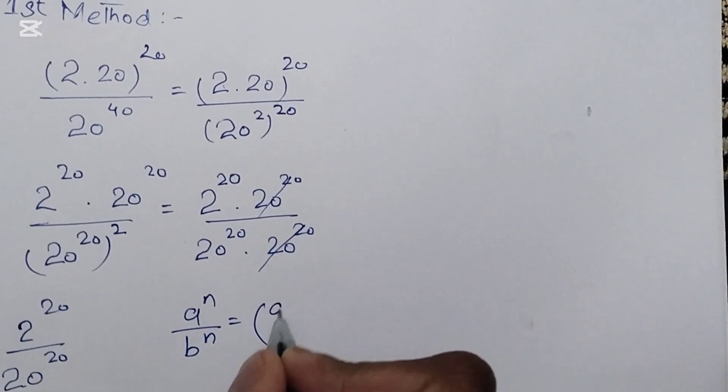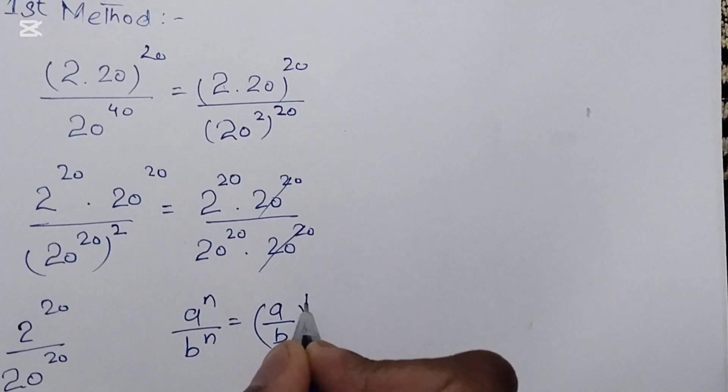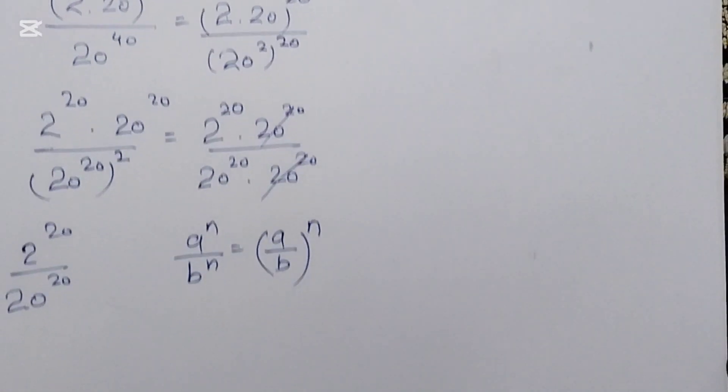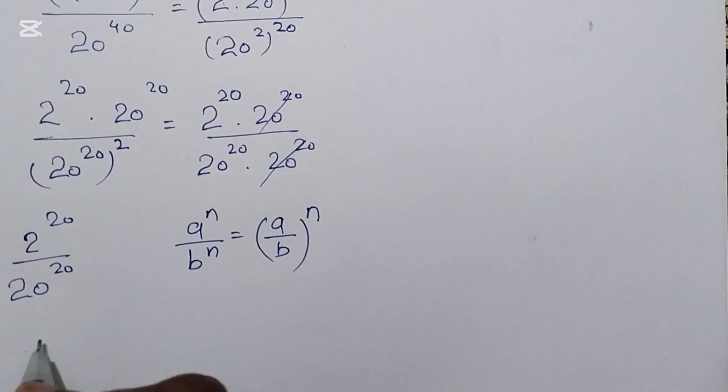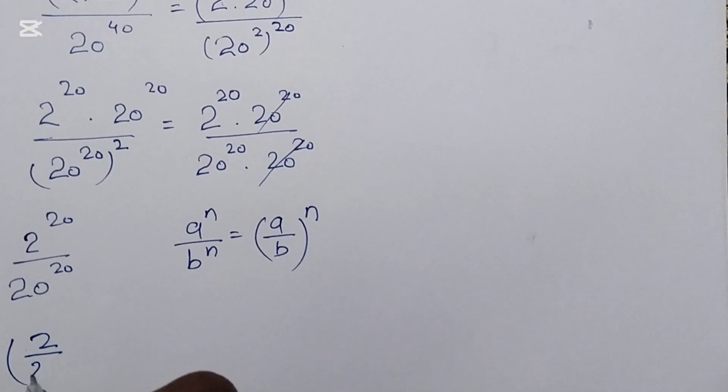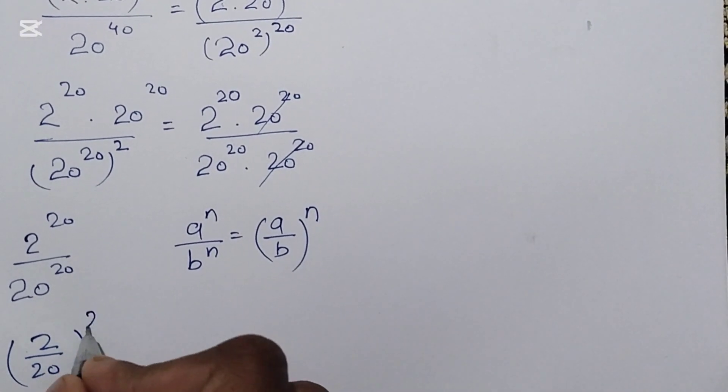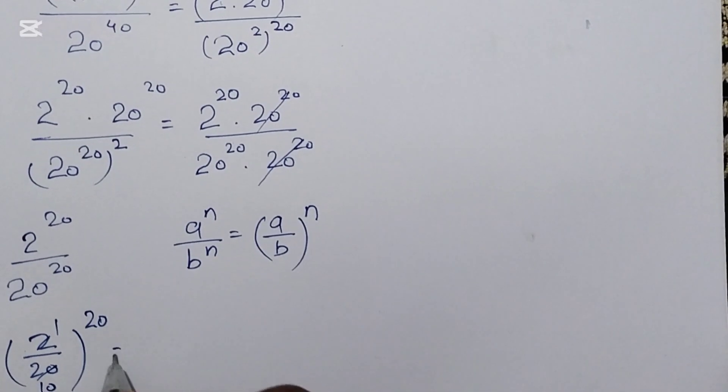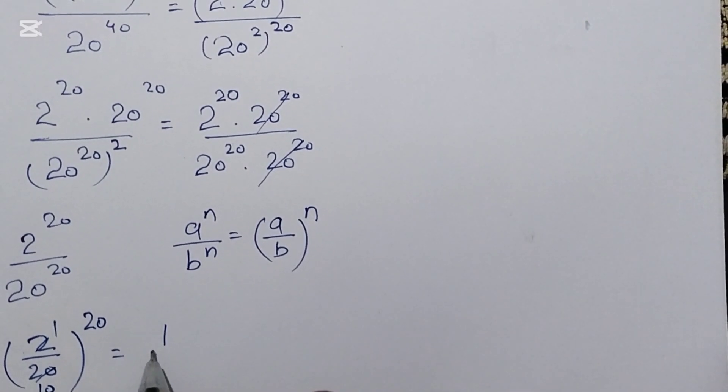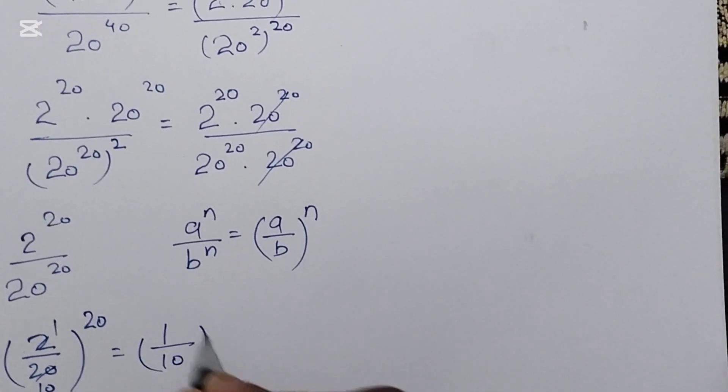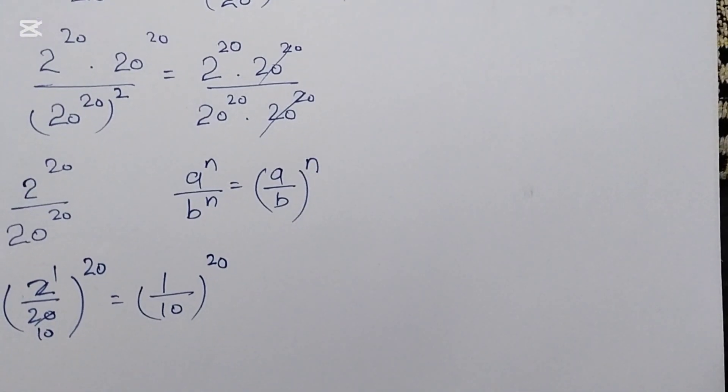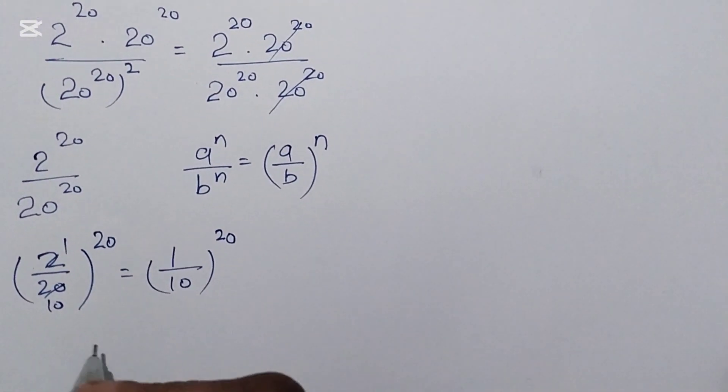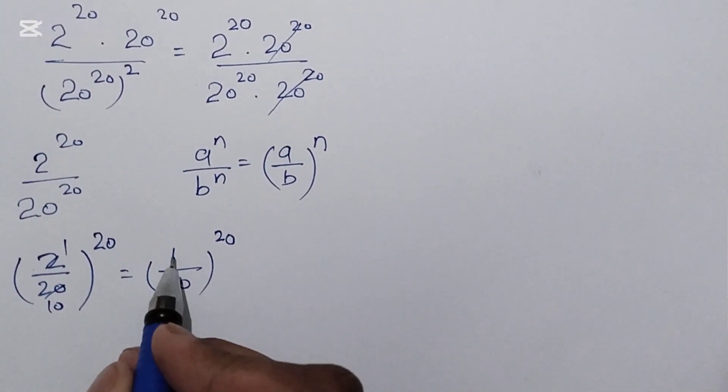We will use this formula here. It will be (2 over 20) whole power 20. 2 divided by 20 is 1 divided by 10. Final answer is 1 over 10^20.